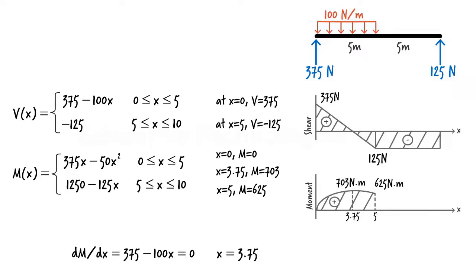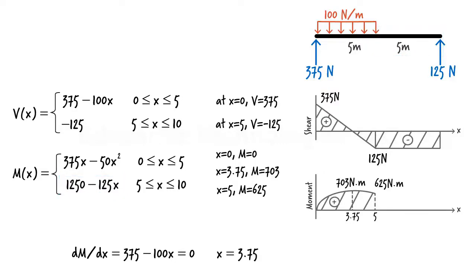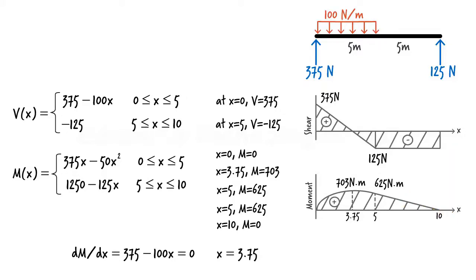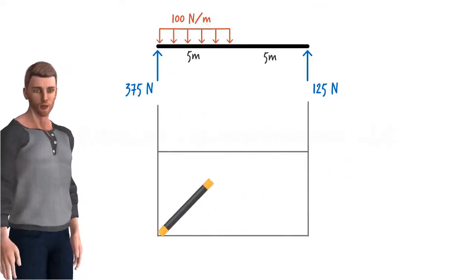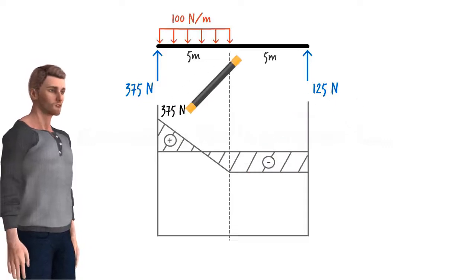Since the diagram is above the x-axis, moment is considered positive in the entire region where x is between 0 and 5. Moment in the right segment of the beam, where x is between 5 and 10, is given by equation 1250 minus 125x. This is a line equation. Evaluating at its endpoints: at x equals 5, moment equals 625; at x equals 10, moment is 0. So moment changes linearly from 625 to 0 in this segment. In summary, in this case, shear is partly positive and partly negative, whereas bending moment remains positive throughout the beam.